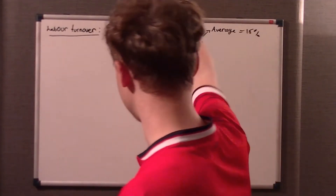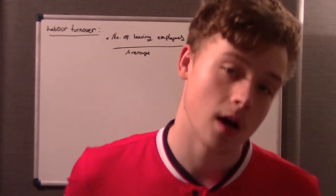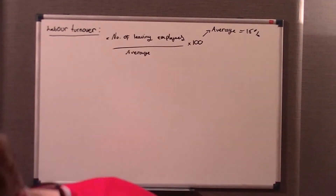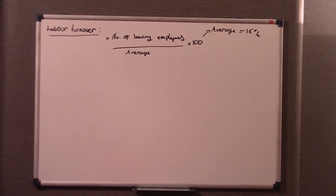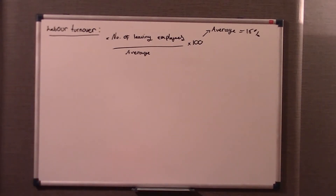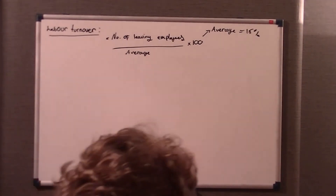How do we decrease labour turnover? We can increase motivational incentives — we'll go over that in a later video on motivation. We've got a couple of theorists: Taylor thought it was about money, Mayo thought it was about social interaction, Abraham Maslow had a couple of ideas, and Herzberg thought it was about hygiene.